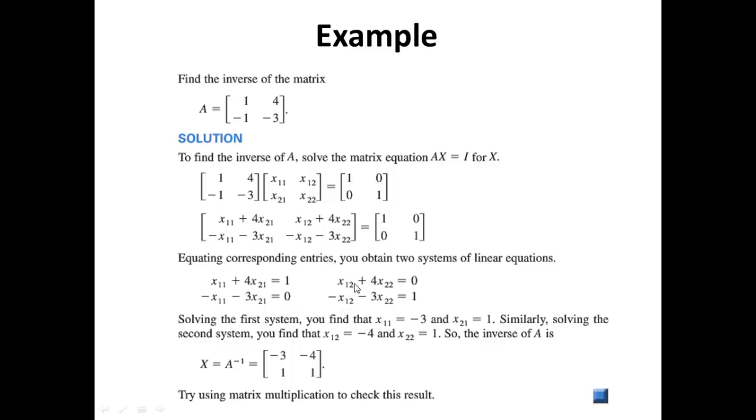If X is the inverse, then A times X must be equal to I. We use our definition of matrix multiplication and we end up with a matrix equals I. We use the definition of matrix equality, equate corresponding entries, we end up with two systems of linear equations. We solve this system using our reduced row echelon form and we end up with X equals negative 3, negative 4, 1, 1. Now don't be so quick as to say that this matrix must be equal to A inverse. You have to first of all verify that X times A also equals I. So if A times X equals I and X times A equals I, then we can boldly and confidently conclude that the matrix X that we arrived at must be equal to the inverse of A.